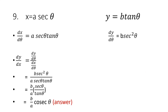Question number 9: x equals a secθ, so dx by dθ = a secθ tanθ, because the derivative of secθ is secθ tanθ. y equals b tanθ, and the derivative of tanθ is sec²θ, so dy by dθ = b sec²θ. dy by dx = dy by dθ upon dx by dθ = b sec²θ / (a secθ tanθ). b upon a is taken common. sec²θ and secθ cancel, leaving secθ upon tanθ. This can be written as b/(a cosθ).